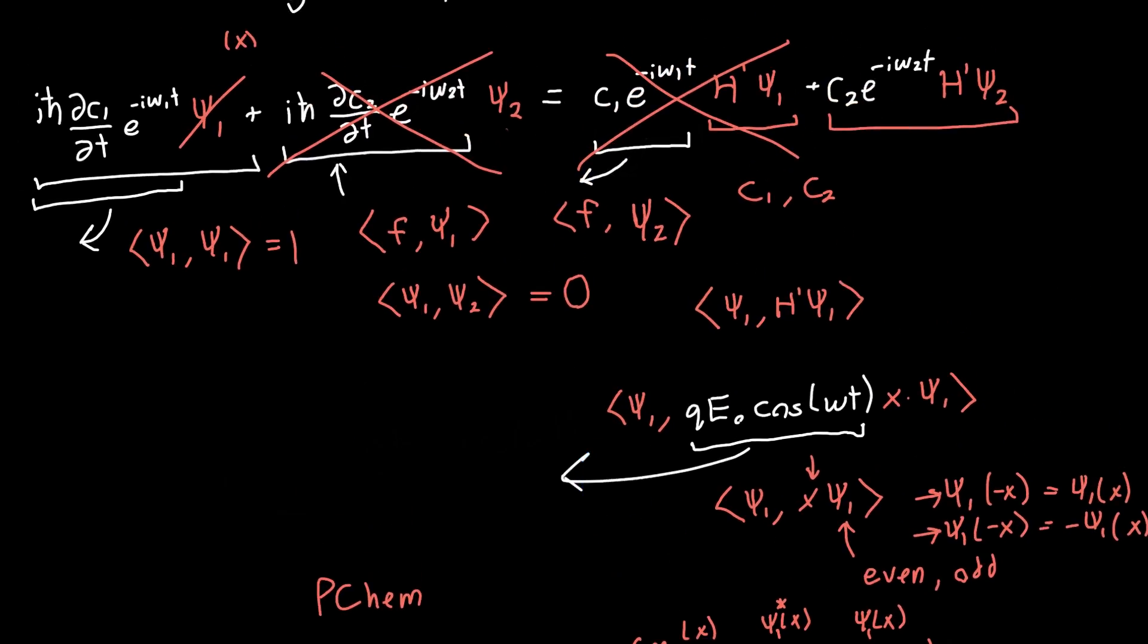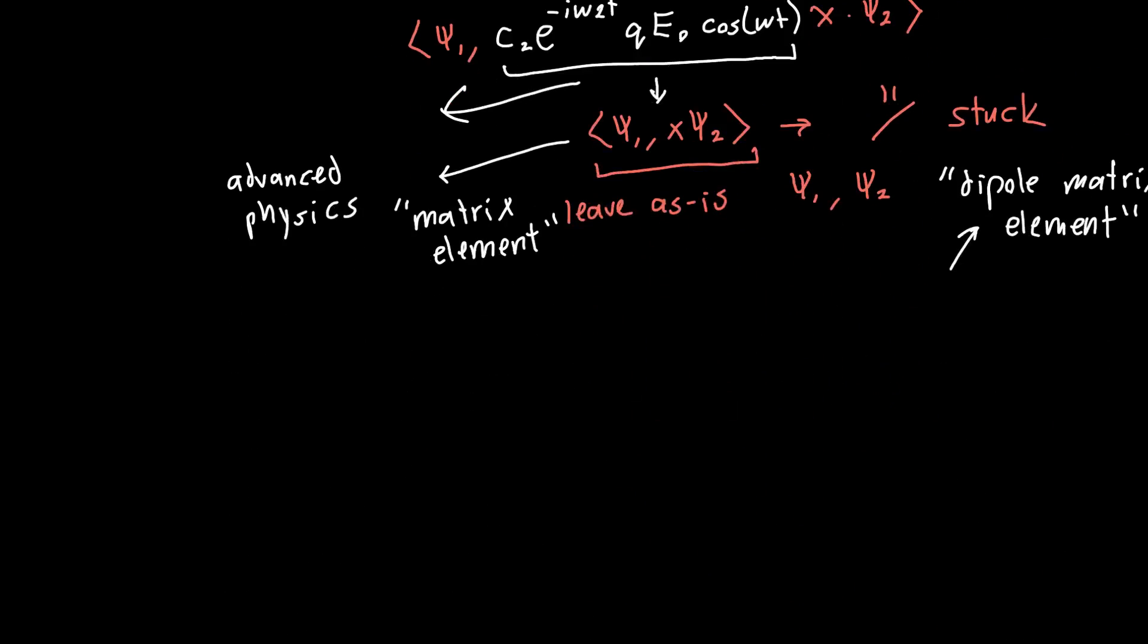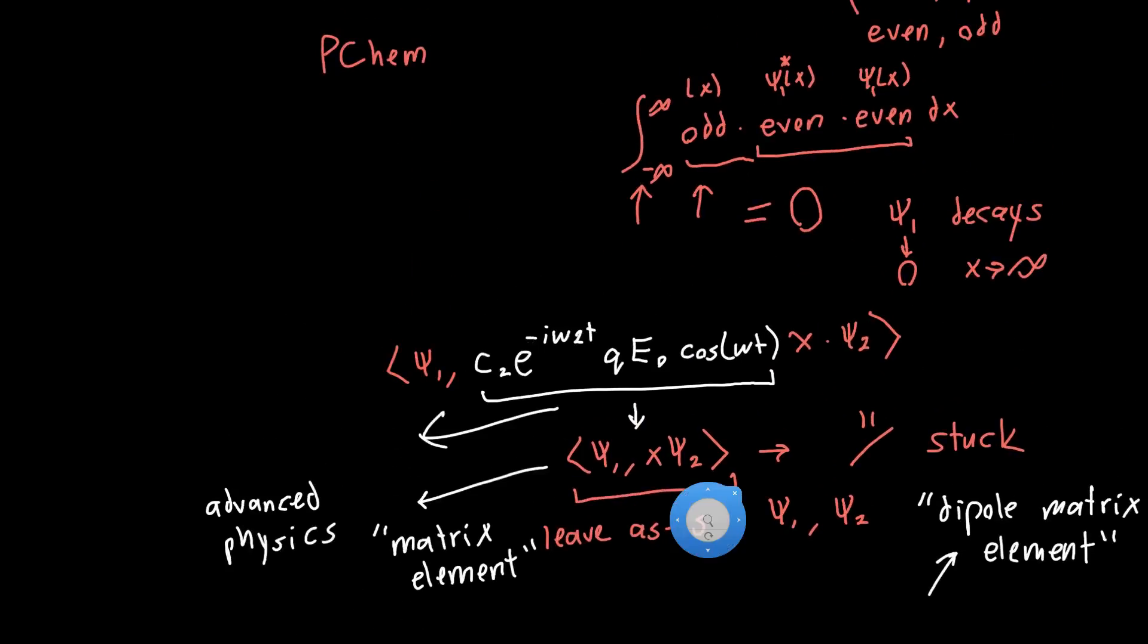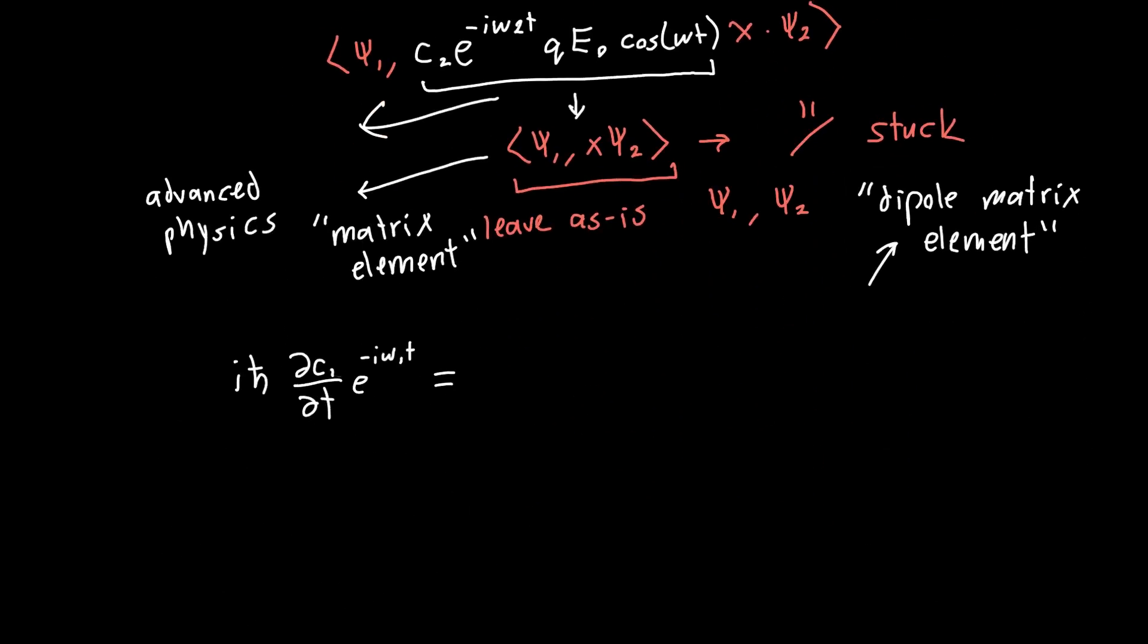After all of that work, let's rewrite our final equation. It's just this term on the left-hand side and this term on the right-hand side with our dipole matrix element. So our final equation is ih bar dc1 dt e to the i omega 1t. This is what we have on the left-hand side. That should be a 1, not a 2. This is all equal to c2 e to the minus i omega 2t times q e naught cosine of omega t multiplied by our dipole matrix element, psi 1 times x psi 2. This is our final answer.